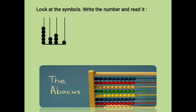Here a few strings are given and beads are given. We will first give them their places — that is thousands, hundreds, tens, and units. In the units place we have one bead, in the tens place we have three beads, in the hundreds place we have two beads, and in the thousands place we have five beads. So the answer will be 5231.